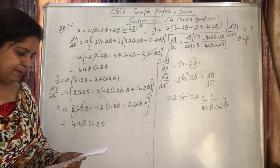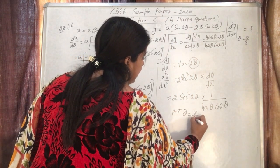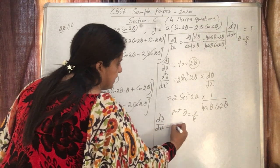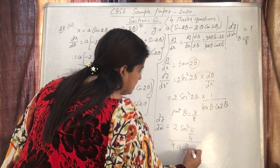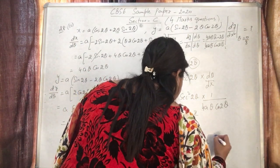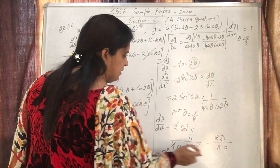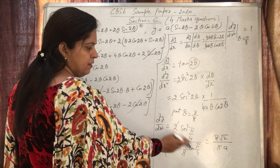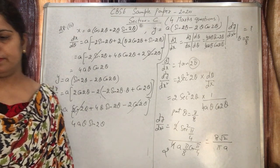Now substitute θ = π/8: d²y/dx² = 2sec²(π/4) / (4a·(π/8)·cos(π/4)). We know cos(π/4) = 1/√2 and sec(π/4) = √2. After substituting and simplifying — sec²(π/4) = 2, cos(π/4) = 1/√2 — we get d²y/dx² = 8√2/(πa). That completes question 28.